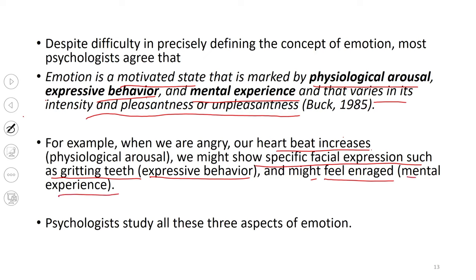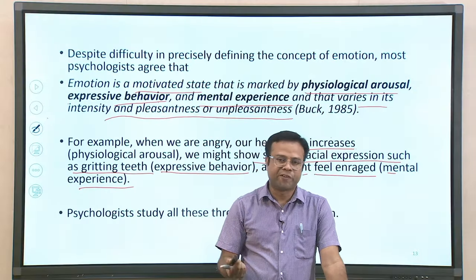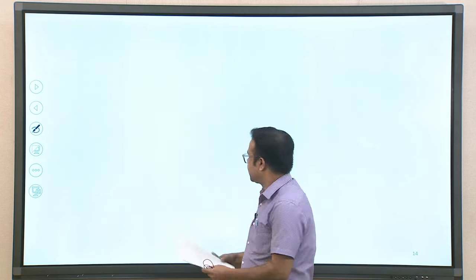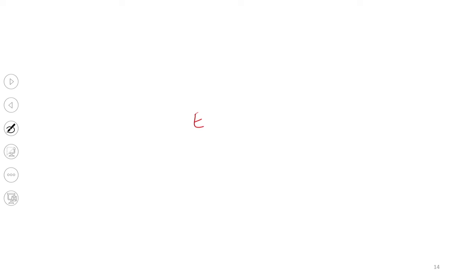This example clearly shows what the aspects of emotion are. This is one definition that includes a variety of aspects of emotion. Psychologists study all these aspects of emotion — physiological arousal, expressive behavior, and mental experiences. There are three major components to emotion, and whenever we experience emotion, all three components will be present.